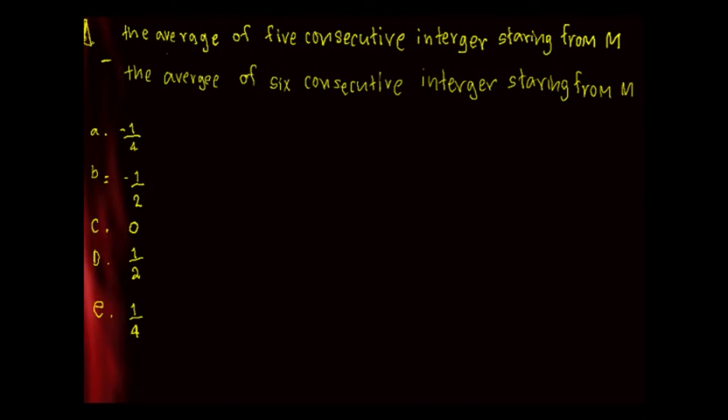The question is the average of five consecutive integers minus the average of six consecutive integers. So let's choose the numbers negative 2, negative 1, 0, 1, 2. Find the average of five consecutive. That's equal to negative 2 plus negative 1 plus 0 plus 1 plus 2 divided by 5, so equal to 0 over 5, which is 0.